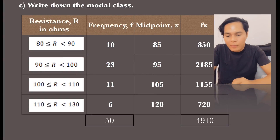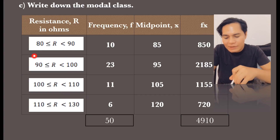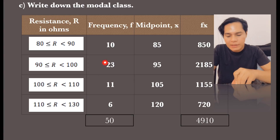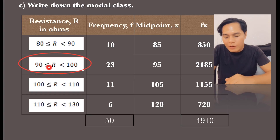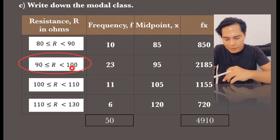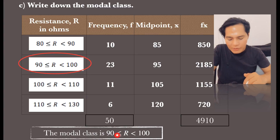The last question is write down the modal class. Just look at the class intervals and check which one has the highest frequency — the highest frequency is 23. Therefore, the modal class is the resistance greater than or equal to 90 but less than 100.